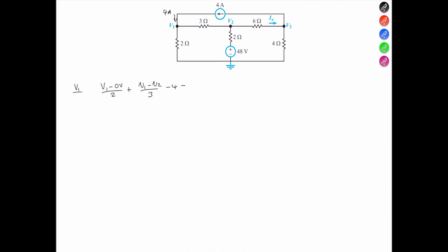At V2, we take V2 with reference to V1, that's all over the 3-ohms, plus V2 with reference to the 48-volt, so V2 minus 48.